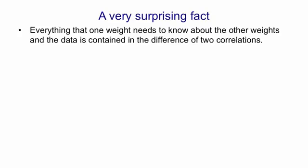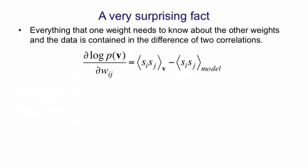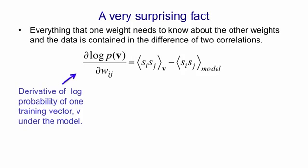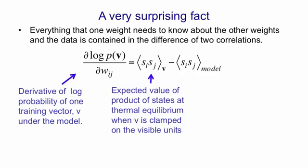The learning algorithm only requires local information. So it turns out that everything that one weight needs to know about all the other weights, and about the data, is contained in the difference of two correlations. Another way of saying that is that if you take the log probability that the Boltzmann machine assigns to a visible vector v, and ask about the derivative of that log probability with respect to a weight w_ij, it's the difference of the expected value of the products of the states of i and j when the networks settle to thermal equilibrium with v clamped on the visible units.